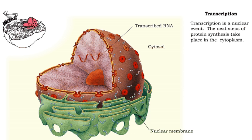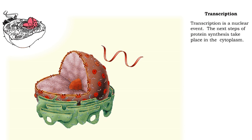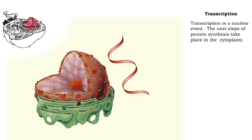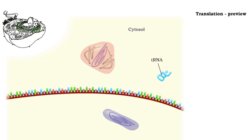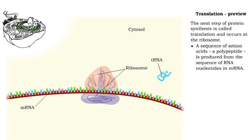Transcription is a nuclear event. The next steps of protein synthesis continue in the cytoplasm. The ribosome is responsible for the next step of protein synthesis, which is called translation. Here, the message in the RNA strand is translated into a sequence of amino acids or a polypeptide.